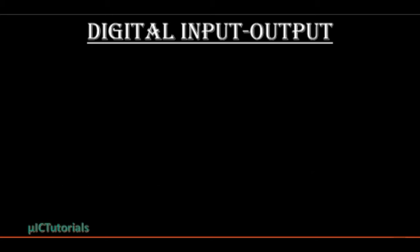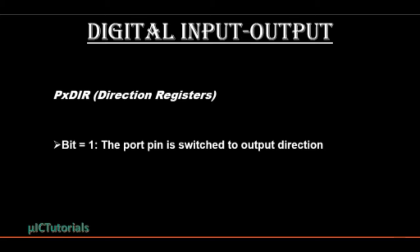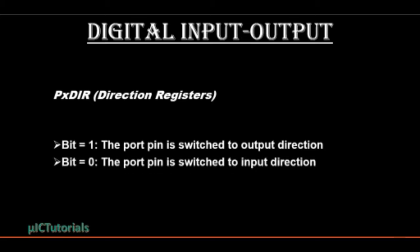In MSP430, the register PXDIR controls the direction of the port — input or output. Each bit in each PXDIR register selects the direction of the corresponding IO pin, where X refers to the port number. Writing a 1 will make the corresponding port bit as output direction, and writing a 0 will make the corresponding port bit as input direction.